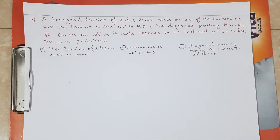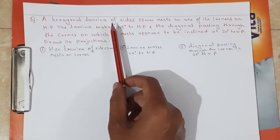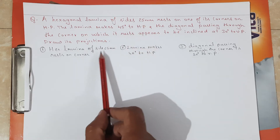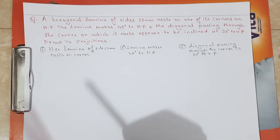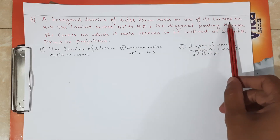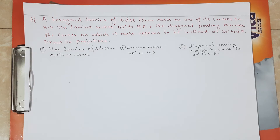Hello friends, welcome to the class on engineering drawing. In this video we are going to solve an assignment problem. The problem involves a hexagonal lamina of size 25 mm, resting on one of its corners on the HP.